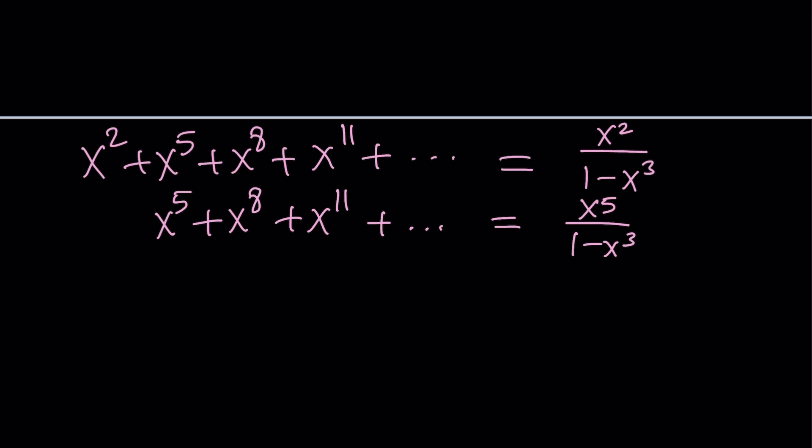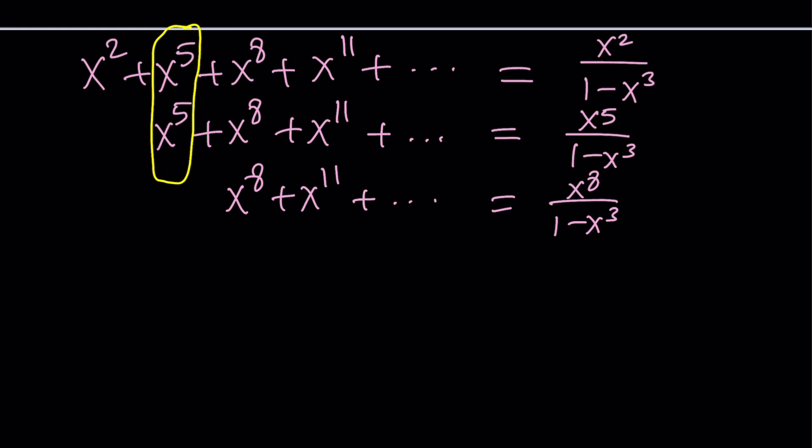Now, notice that if I add these two things in columns, I'm getting 2x to the 5th, which is good. Now, I'm going to add more to it because I do need more x to the 8th, so let's go ahead and start this time at x to the 8th, and of course, that's just going to change the first term. Do you want to go further? I don't think you need to, but let's do one more time. I'm going to use x to the 11th over 1 minus x cubed.